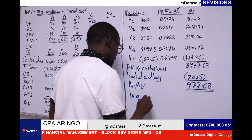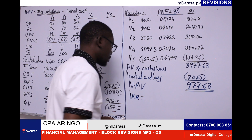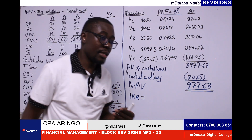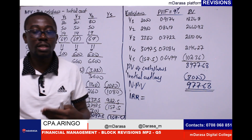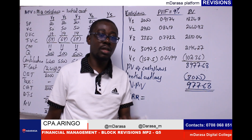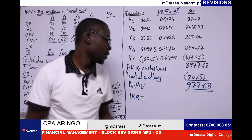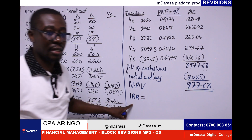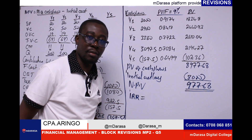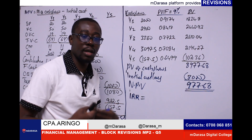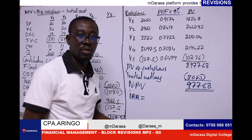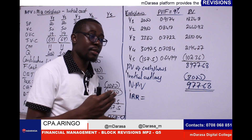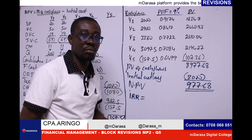Remember, we say that internal rate of return is that discount rate that will equate our NPV to be equal to zero. In this case, we say that this is a trial and error method. Being a trial and error method, it will be upon us to guess the values to use so that we get a rate that equates our NPV to zero.